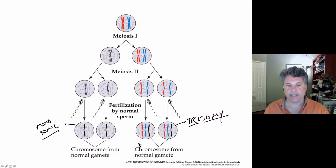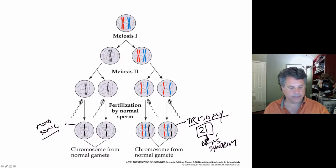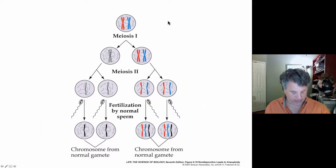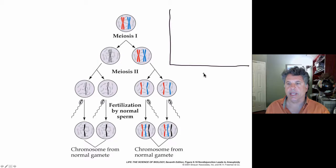Those would end up as spontaneous abortions. They would not be viable. Unless we are talking about trisomy for chromosome 21, and that leads to Down syndrome. So trisomy for chromosome 21 results in Down syndrome. And there is a reason why the incidence of Down syndrome increases with maternal age. If you look at maternal age in humans versus the incidence of Down syndrome, you see that after about age 35 there is a rise in the incidence of Down syndrome. This marks an inflection point.